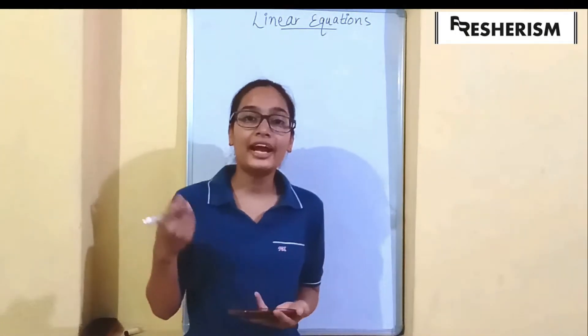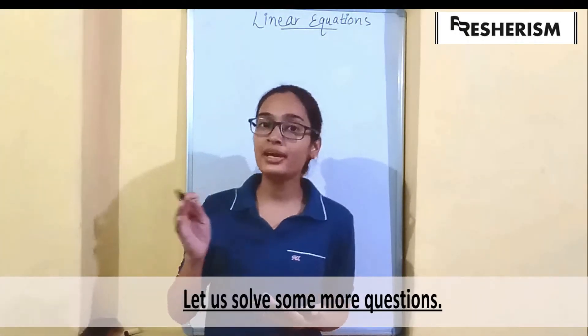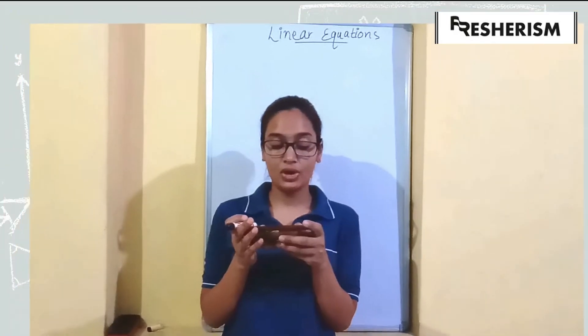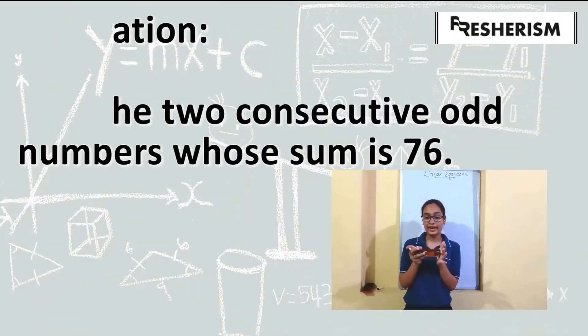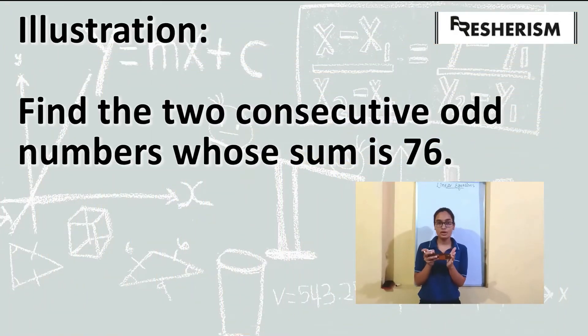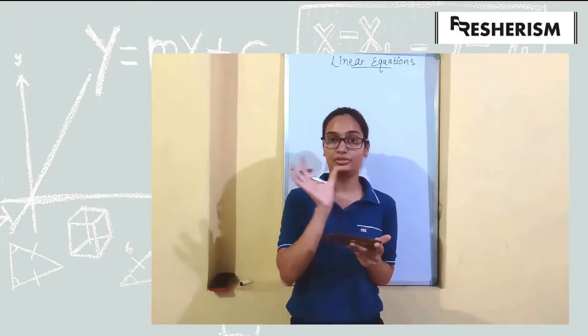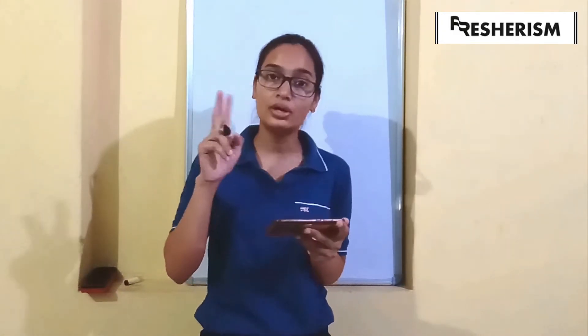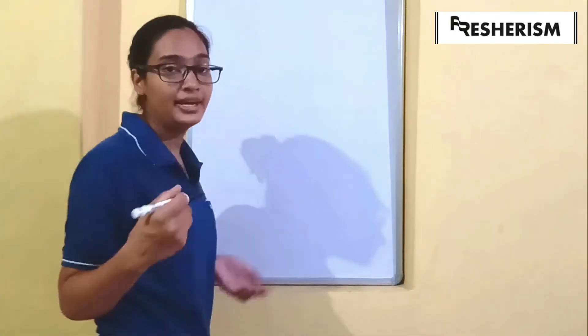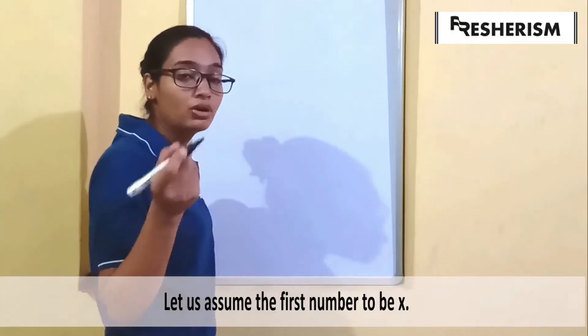Let us understand this further by doing some more questions. The question is: find the two consecutive odd numbers whose sum is 76. This is a one-line question and you have to solve it. We are given that the sum of two consecutive odd numbers is 76.